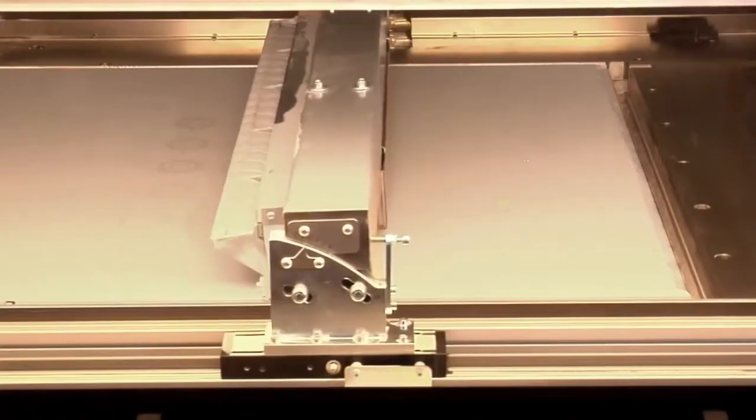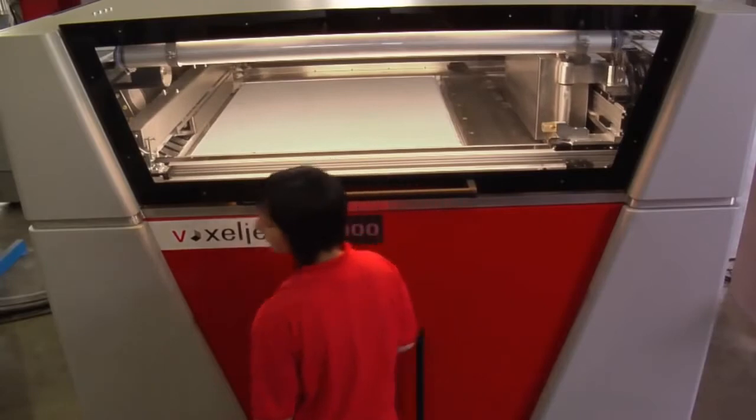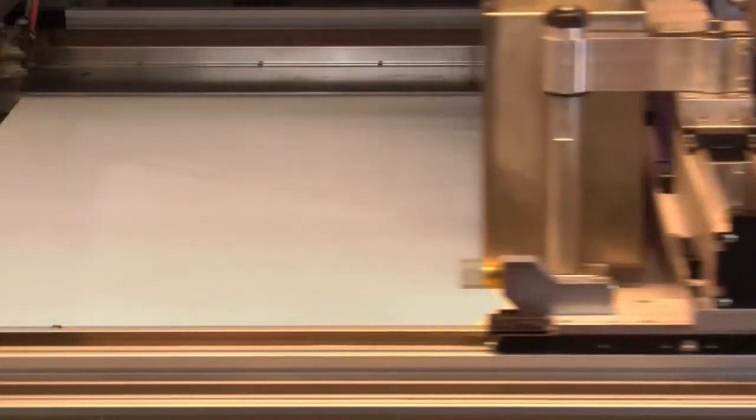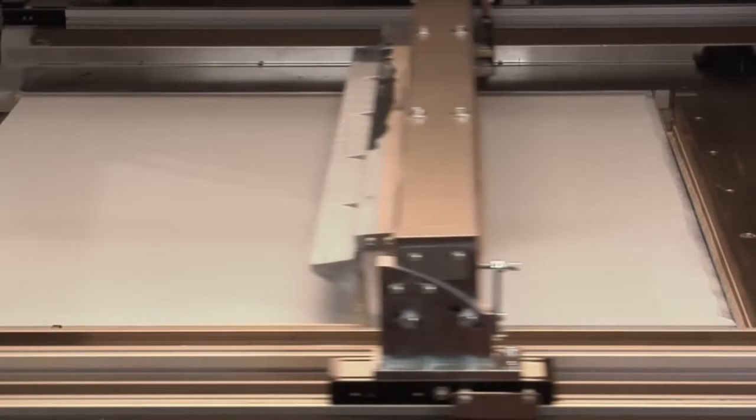At the same time, the printer head selectively doses the binder at the points at which the model is created. The 3D printer's vertical build speed can reach up to 18 millimeters per hour.